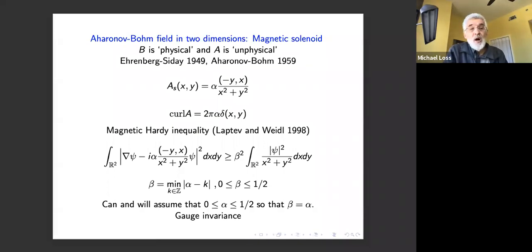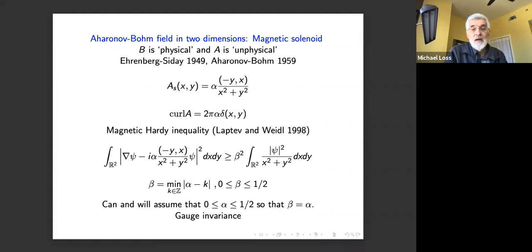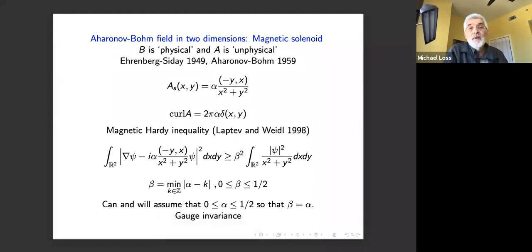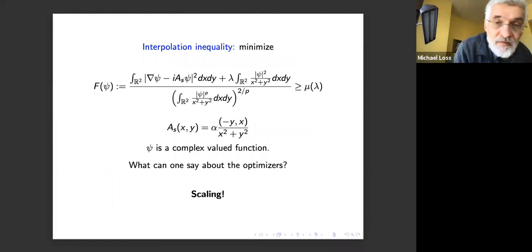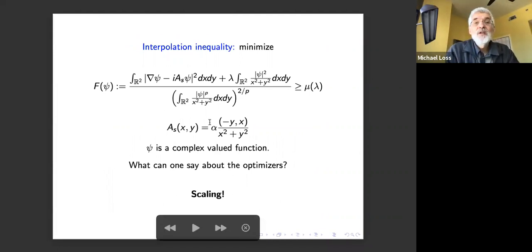From now on we assume α is a number between 0 and 1/2, since β is always in [0, 1/2] and we can always make a gauge transformation to shift the phase. We investigate an interpolation inequality: the kinetic energy in two dimensions with the Aharonov–Bohm field, plus weight terms λ·|ψ|²/r² and similar terms down below.